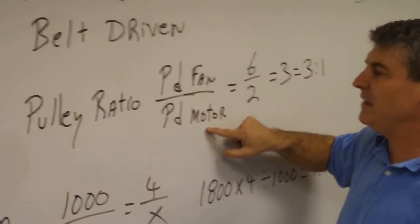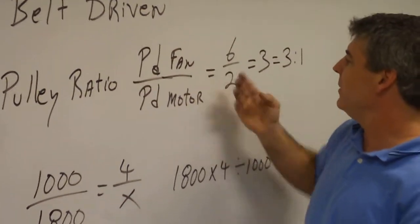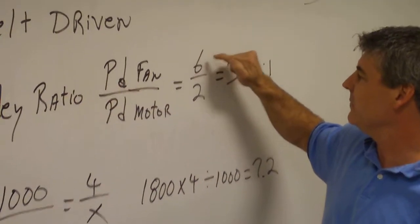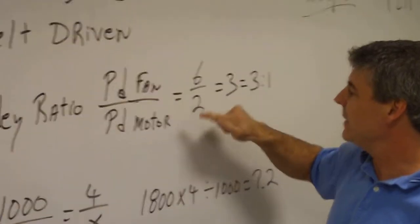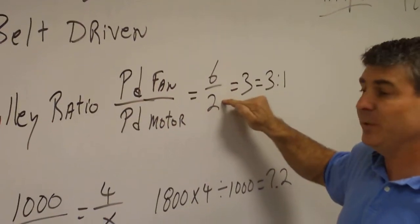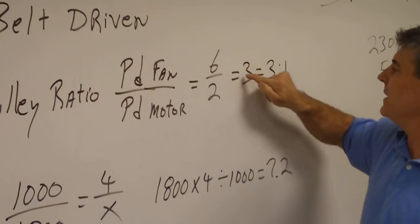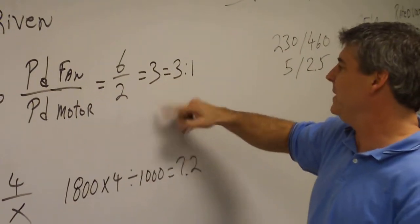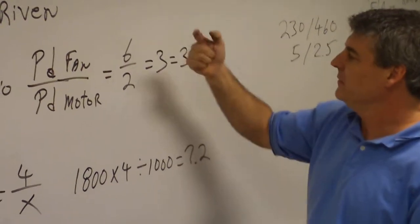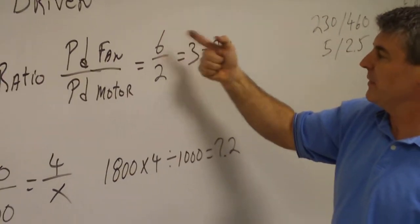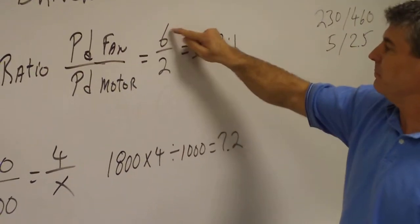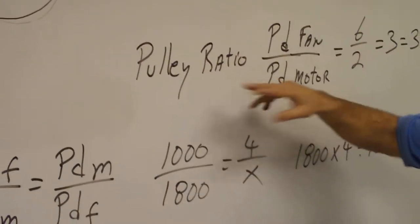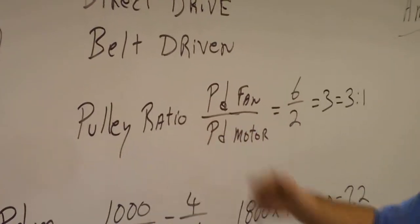So if for an example, you've got a fan diameter of six inches and you've got a pitch diameter of a motor of two inches, then you just simply divide and come up with three. So the ratio would be three to one, because six would be three times two. So it would be three to one pulley ratio. That's a simple calculation.